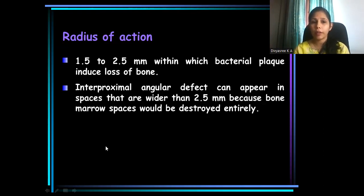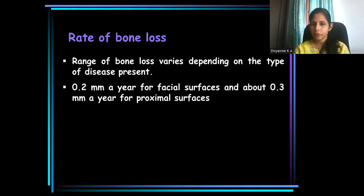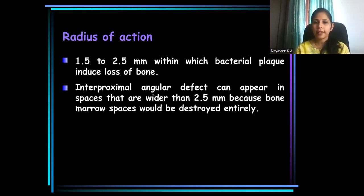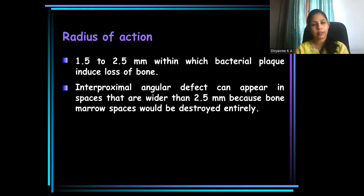That area has been found to be 1.5 to 2.5 mm — the radius of action. This is the reason why interproximal angular defects occur only in areas where the bone width is more than 2.5 mm, and why vertical or angular bone loss does not occur in lower anterior areas where the amount of cancellous bone is less, as marrow spaces there are destroyed entirely. The interproximal angular defect can appear only in spaces wider than 2.5 mm.